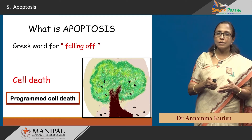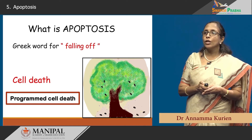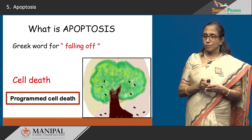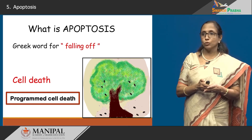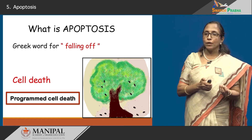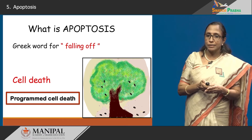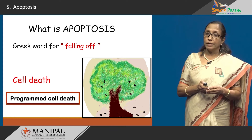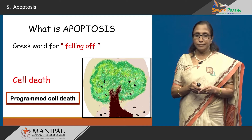What is apoptosis? In Greek, the word means falling off or dropping off. How do you pronounce the word? It is apoptosis — it is the falling away or dropping off of either petals or leaves from a tree. If you look at that tree, only some cells, a few cells, are dropping off.